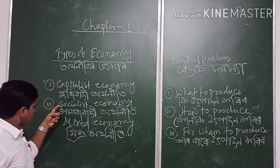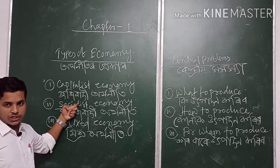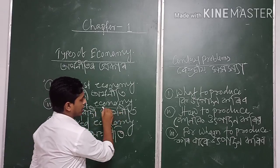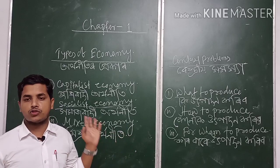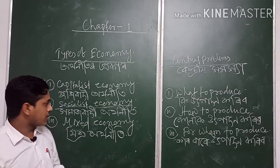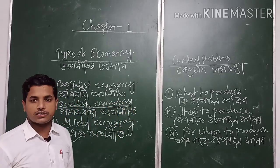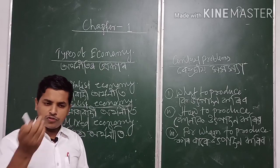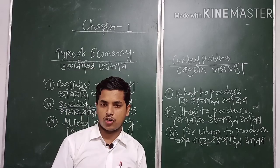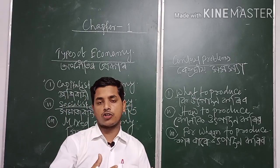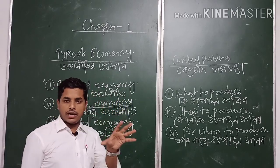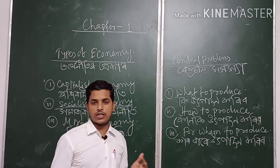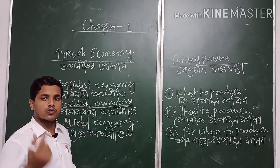Next is Socialist Economy, which is the direct opposite of Capitalist Economy. In capitalist economy everything is owned and controlled by the private sector, but in socialist economy everything is owned, controlled, and operated by the public sector. There is no private sector in socialist economy. For example, Cuba. Socialist economy is also known as centrally planned economy because there is one central authority — the central government — who controls everything in the economy.